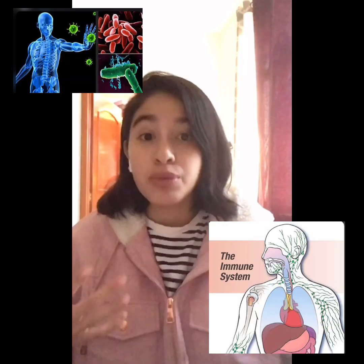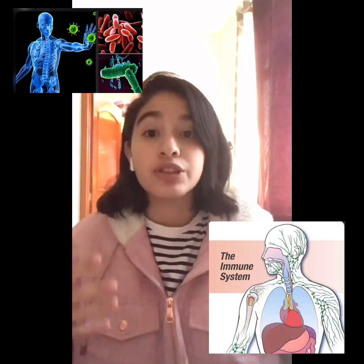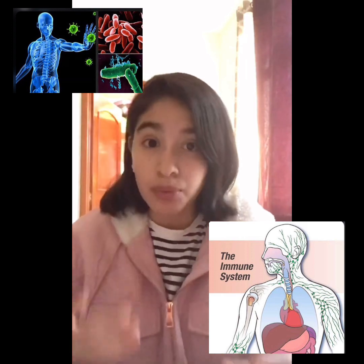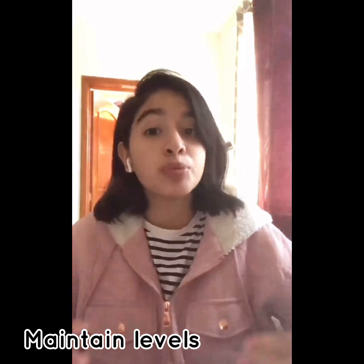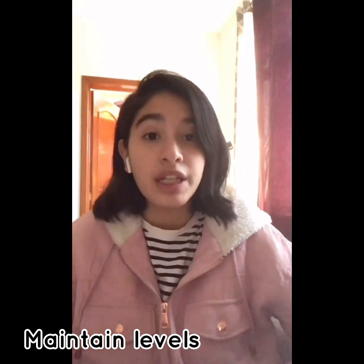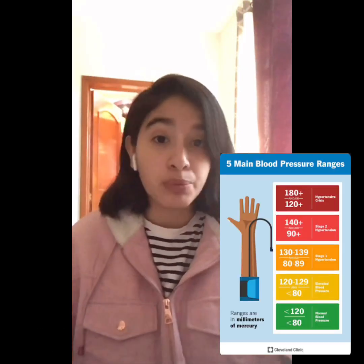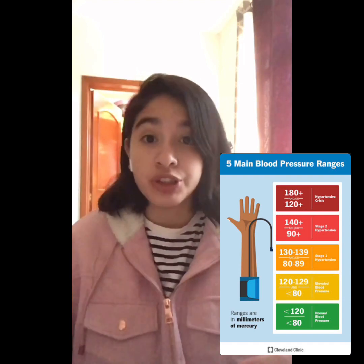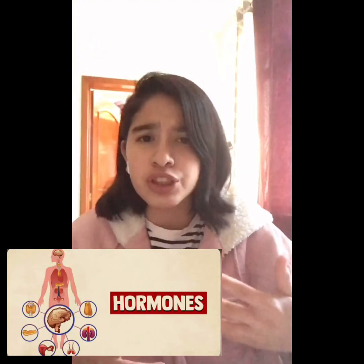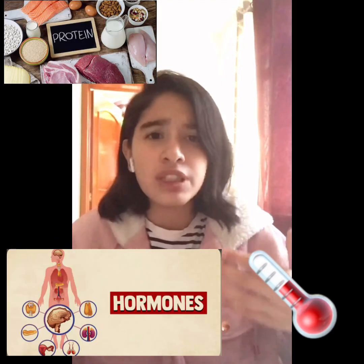The immune system is in charge of protecting the body from bacteria. What it usually does is alter homeostasis to maintain levels within the body. This is achieved by adjusting acid levels, blood pressure, blood sugar, electrolytes, energy, hormones, oxygen, protein, and temperature.